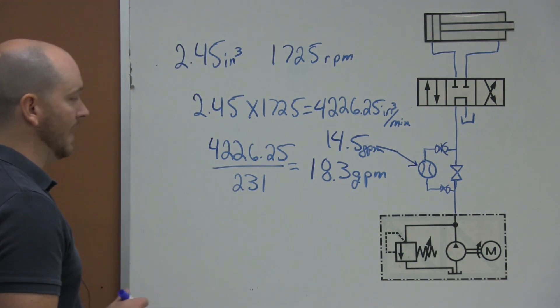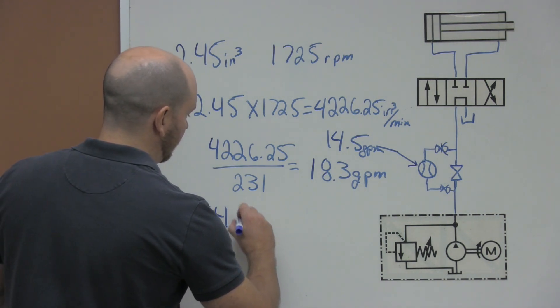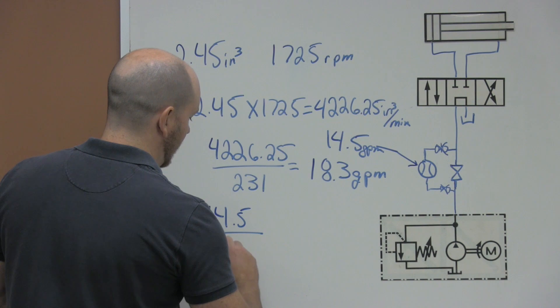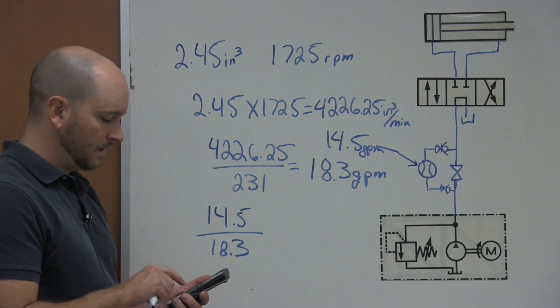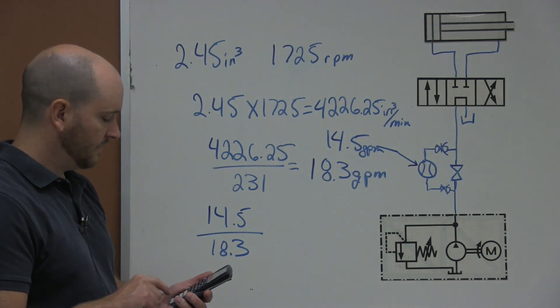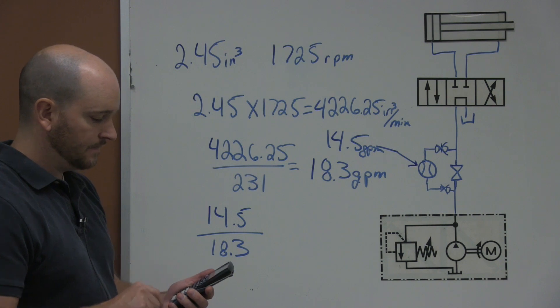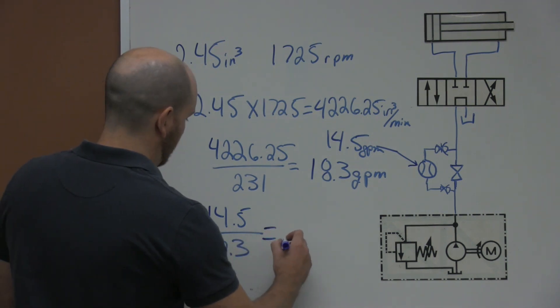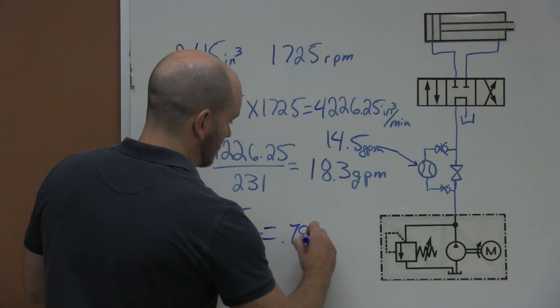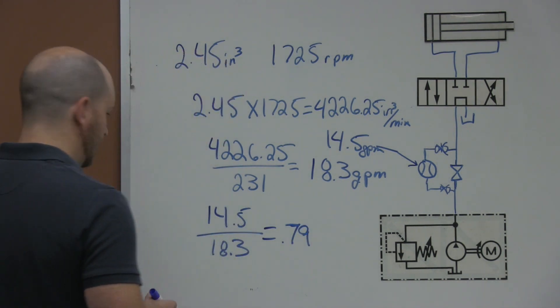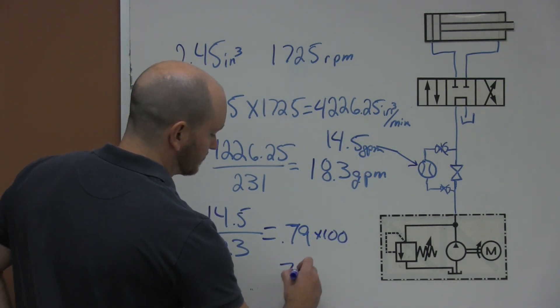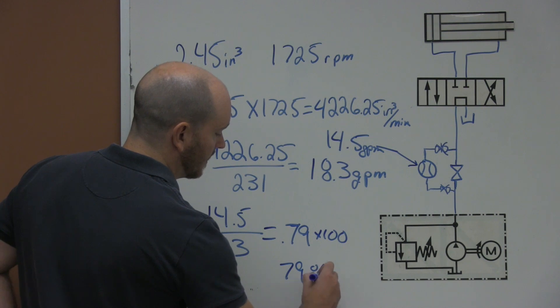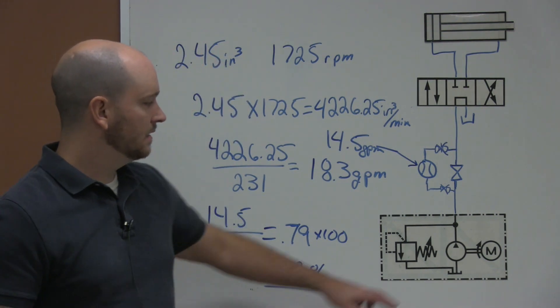Luckily the formula is not too bad. It's actual power divided by theoretical power. So in this case I would take 14.5 divided by 18.3. So I grab my calculator: 14.5 divided by 18.3, and that would equal 0.79. And then because we want it in percentage, multiply it by 100. And so that would give us roughly 79% efficiency of this pump.